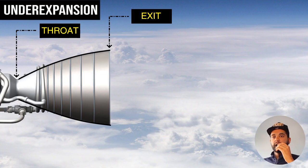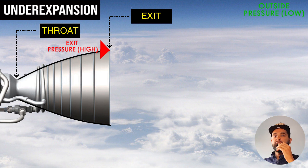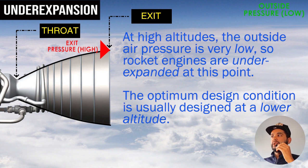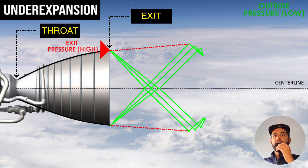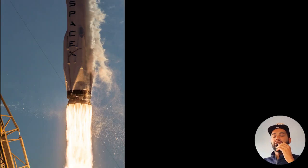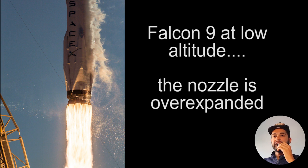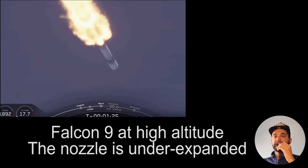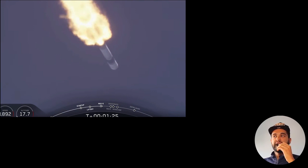We can use these same principles to explain what happens when the nozzle is underexpanded. This is when the pressure at the exit exceeds the pressure outside, and you will most likely achieve this at high altitude. As a result you will first have two sets of expansion waves that form, and the slip line is at a bigger angle. This is why in Falcon Heavy or Falcon 9 launch videos from SpaceX, as the rocket climbs higher and higher, the fan gets bigger and bigger — it is essentially becoming underexpanded. You see the exact same phenomenon in the space shuttle.